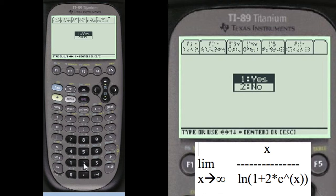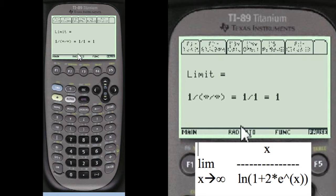So we're going to do number two. And so the limit is one over infinity divided by infinity equals one divided by one equals one. That's the answer.